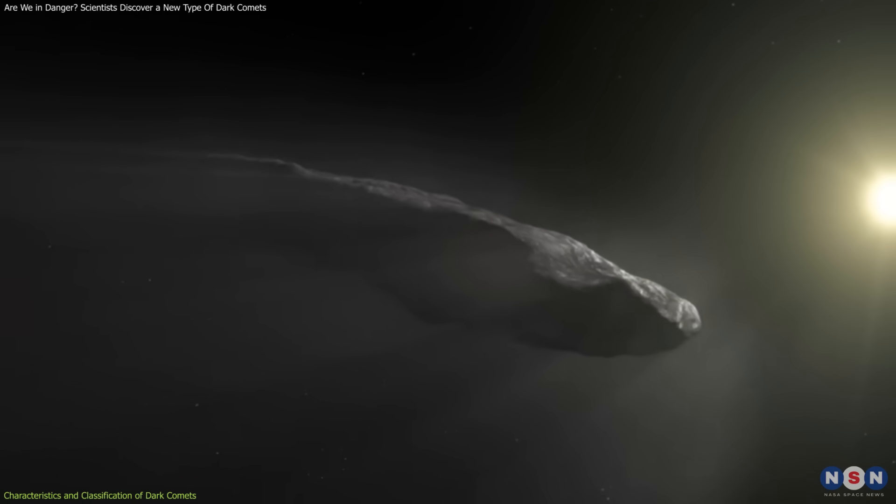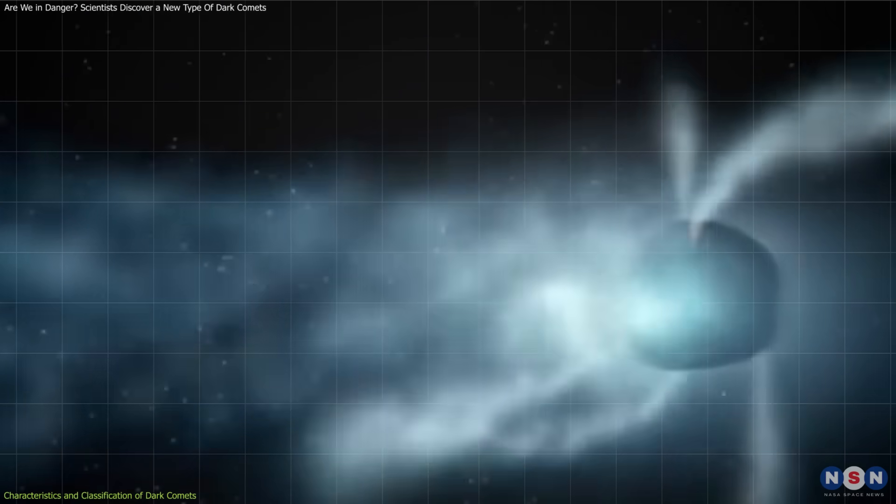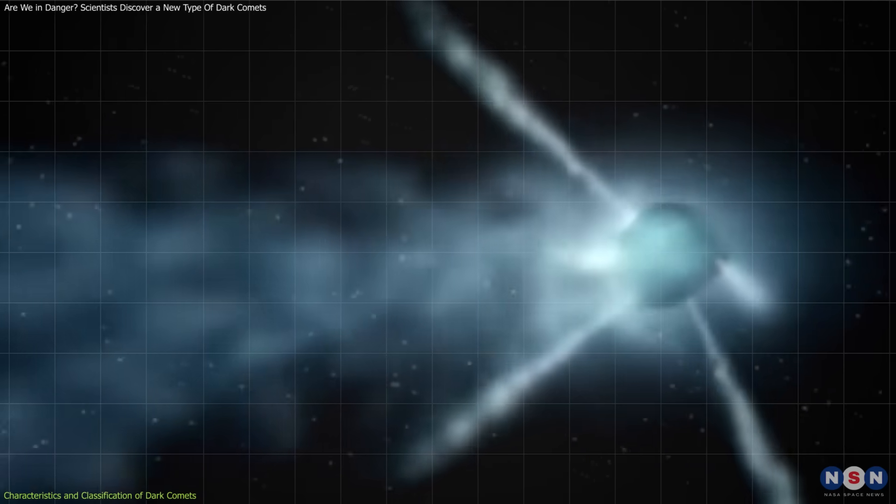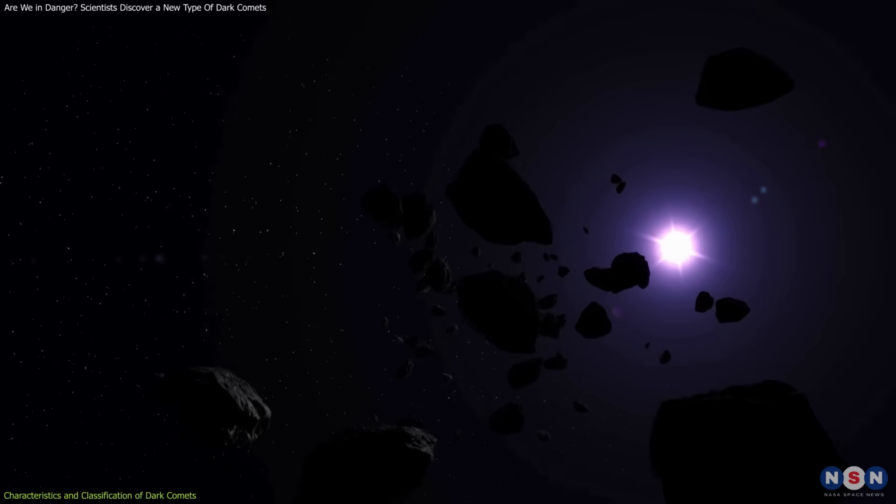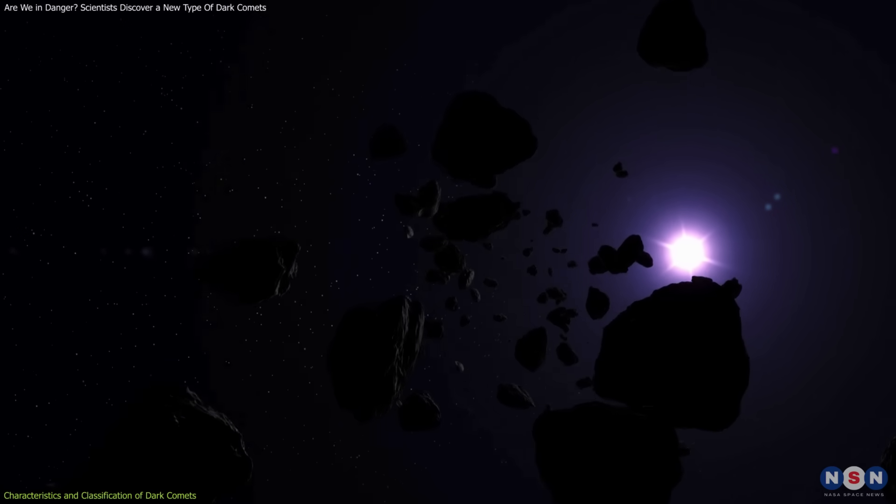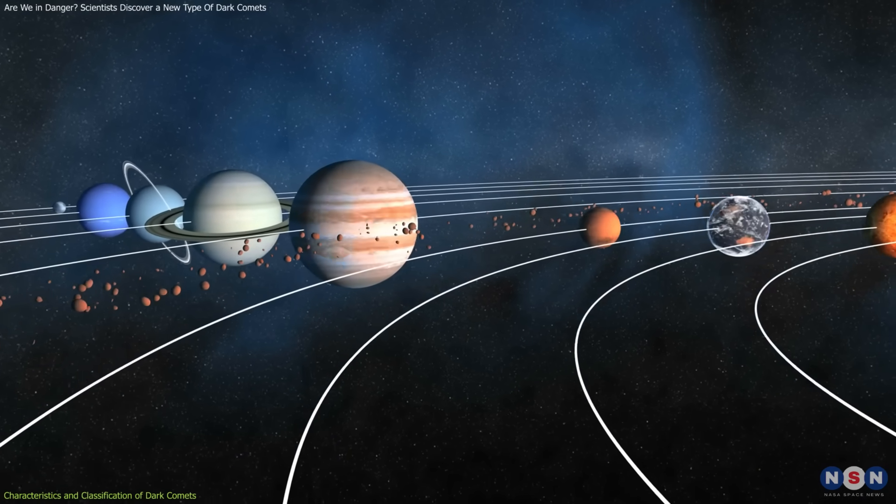However, dark comets lack visible signs of outgassing. Early theories suggested their rapid rotation might cause material to be ejected from their surfaces, but this remains unconfirmed. What's clear is that their behavior challenges the binary classification of comets and asteroids, highlighting the need for a deeper understanding of solar system objects.